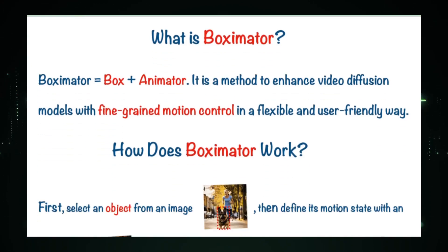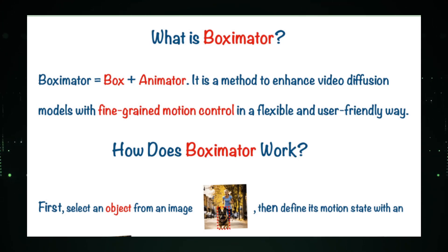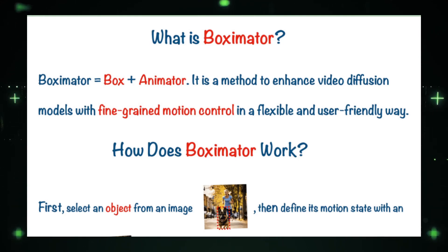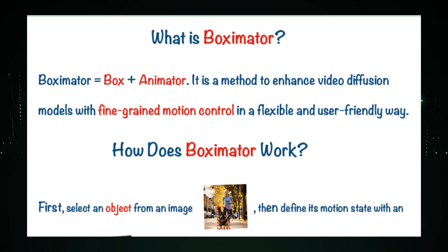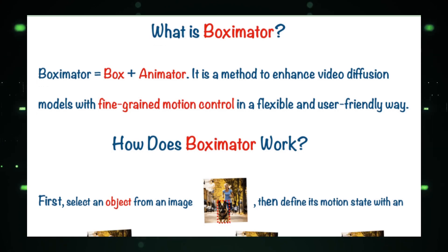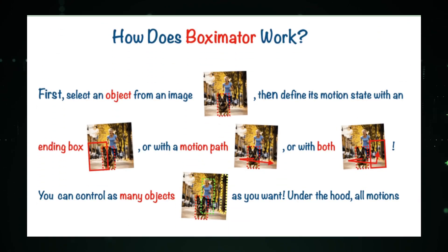Begin by selecting your canvas — an image where stories await their motion. With Boxymator, drawing bounding boxes is not just about defining spaces; it's about setting the stage for action. Each box you draw is a promise of movement, an outline of potential. As you sketch motion paths onto your canvas, you're not just drawing lines — you're charting courses. These paths dictate the flow of movement, from the subtle drift of a leaf to the dynamic leap of a character. Boxymator's flexibility allows for adjustments, ensuring every motion is precise and every trajectory perfect.